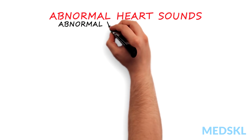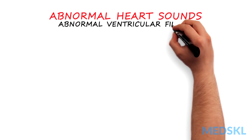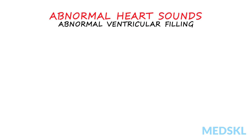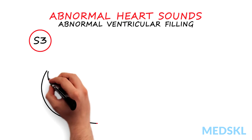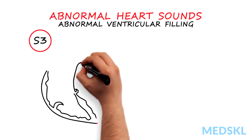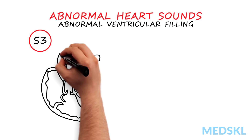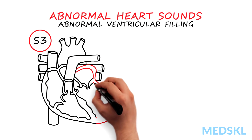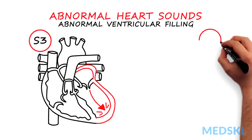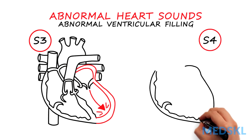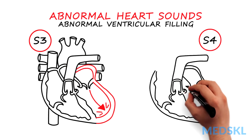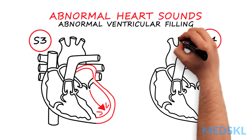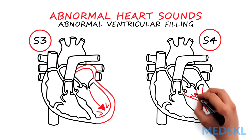Two other common examples of this first mechanism occur when ventricular filling becomes abnormal. A third heart sound, S3, in early diastole, results from the impact of inflowing blood against a distended ventricle. And a fourth sound, S4, results from atrial contraction forcing blood into a stiff ventricle, in late diastole.